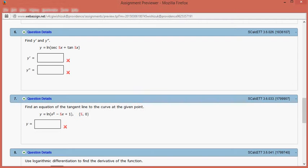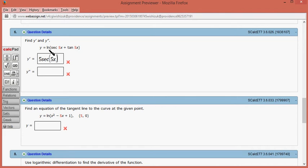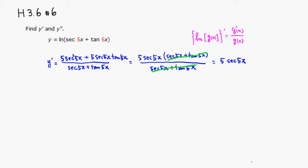So let's type it in: this is 5 secant 5x. Now let's take another derivative.